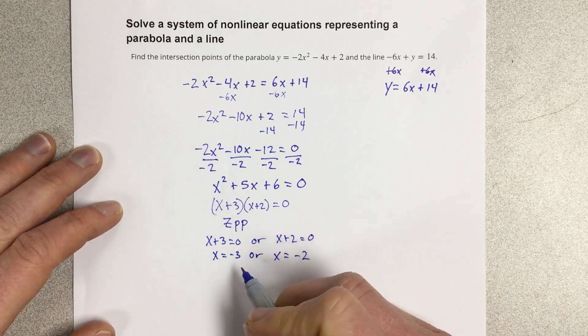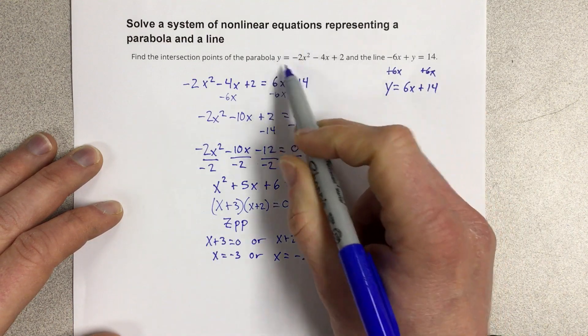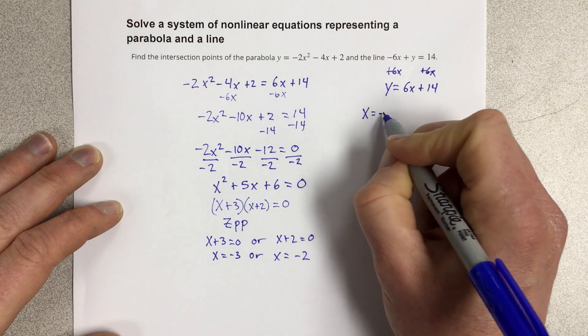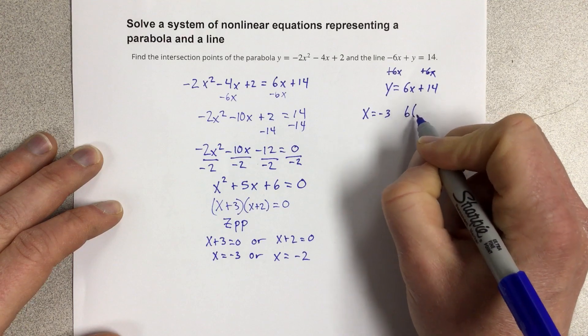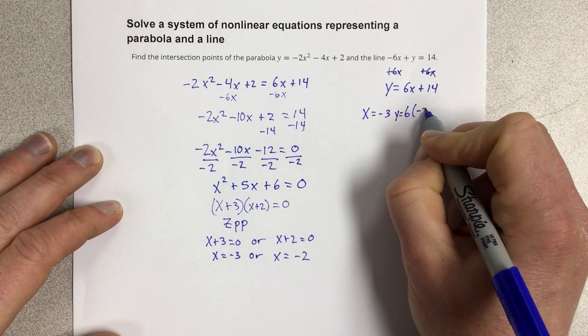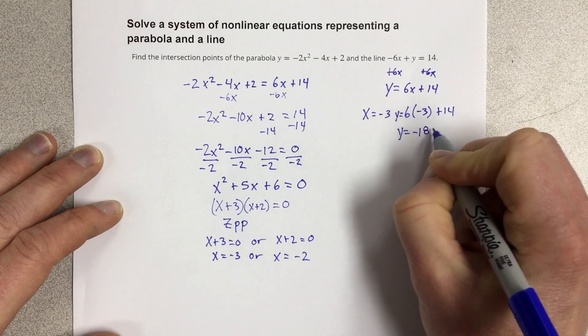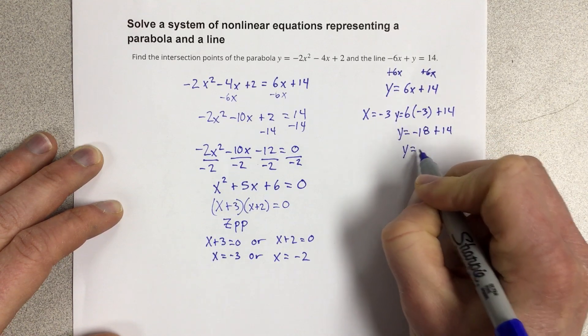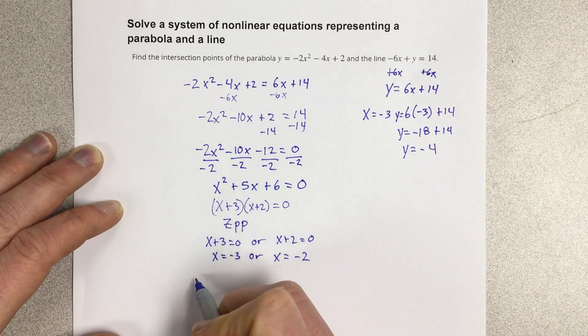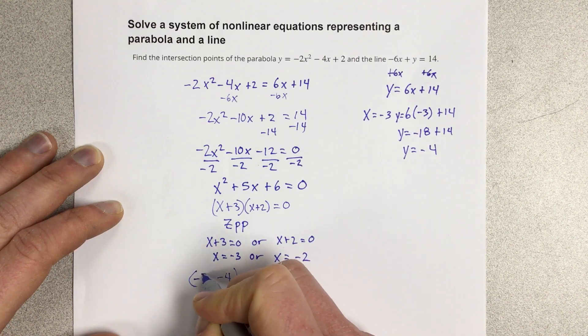What I need to do is find the two possible y values. So I take these x values and plug them into this y equation. Let's start with x equals negative 3. That would be y equals 6 times negative 3 plus 14. So y equals negative 18 plus 14, which is negative 4. So my coordinate for x equals negative 3 would be negative 3 comma negative 4. That's one possible solution to the system.